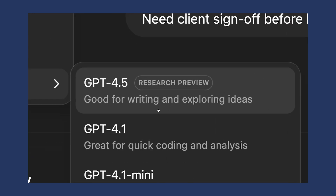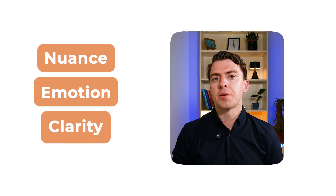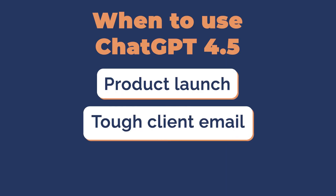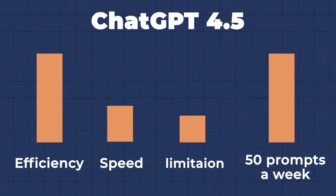The second one is GPT-4.5. This is good for writing and exploring ideas. GPT-4.5 is the most polished of OpenAI's models — it writes with more nuance, emotion, and clarity than any of the others. So if you're drafting something that needs to sound more human-like, like a product launch, a tough client email, or a viral LinkedIn post, this is your go-to. The catch: it's slower and more limited than 4.0, and you're usually limited to about 50 messages per week, so only use it when quality really matters.